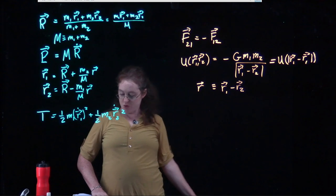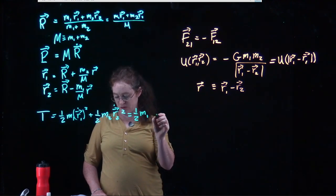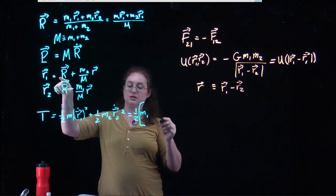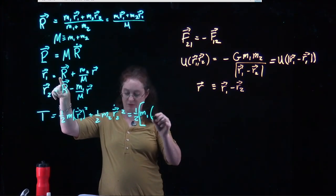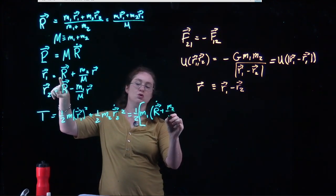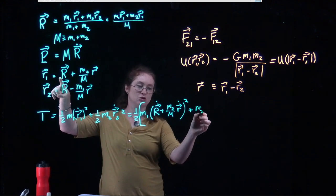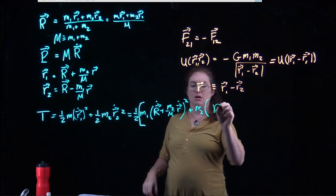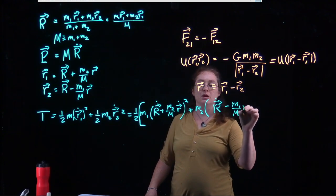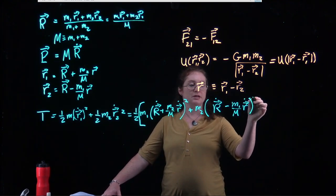We now rewrite the kinetic energy by substituting these expressions for R1-dot and R2-dot. The kinetic energy is one-half M1 times (R-dot + (M2/M)·r-dot) squared plus one-half M2 times (R-dot − (M1/M)·r-dot) squared. Expanding this on a big board is much nicer than on a tiny sheet of paper.